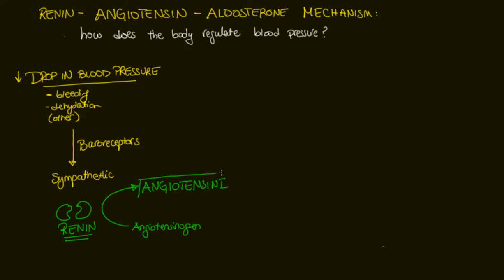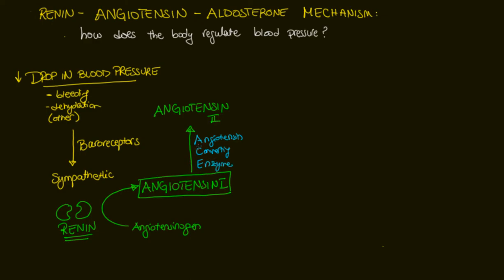Angiotensin 1 is produced and then converted into angiotensin 2 — a few more amino acids are split off. We have an enzyme responsible for producing angiotensin 2, called ACE, which stands for angiotensin converting enzyme. ACE is found in the lungs as well as the kidneys, and it is responsible for converting angiotensin 1 into angiotensin 2.